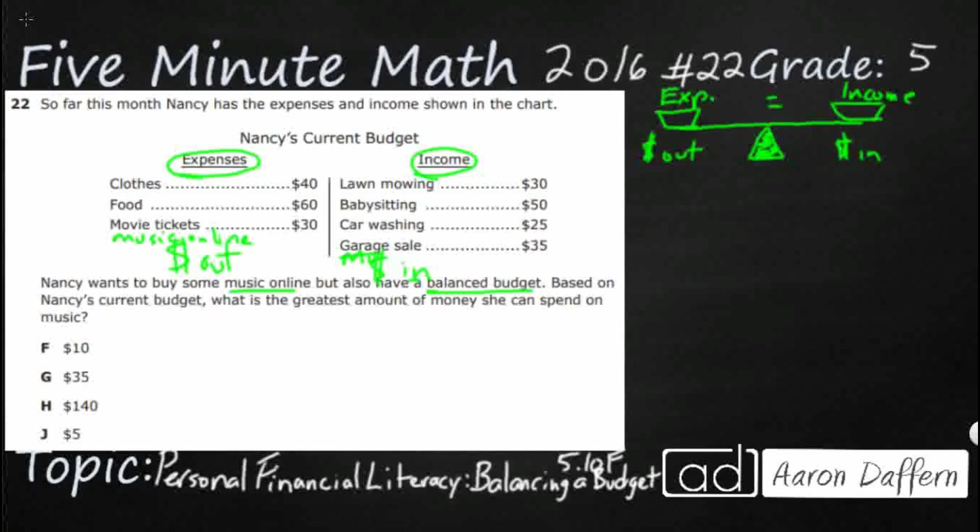If you're going to be unbalanced, it's okay to have your income be a little bit more than your expenses, but it's not good to have the opposite — your expenses greater than your income — because then you're using credit cards or borrowing money to make up the difference, and that's not good.